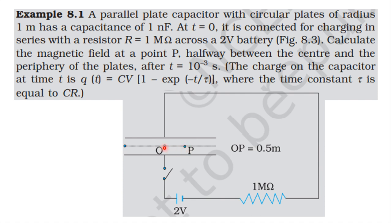The point P is in the middle of the capacitor. The radius of the plates is 1 meter, and from the center to the periphery is 1 meter, so the midpoint is at 0.5 meter. The capacitor has a circular plate of radius 1 meter.